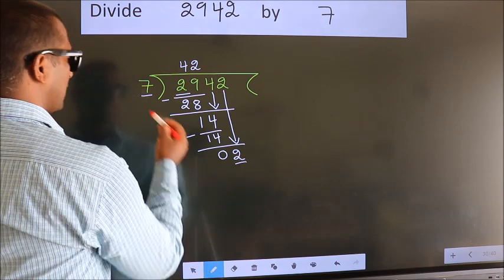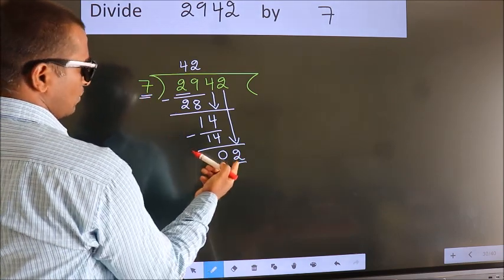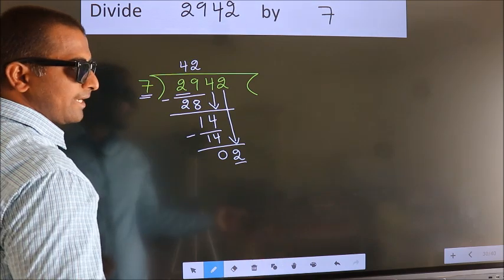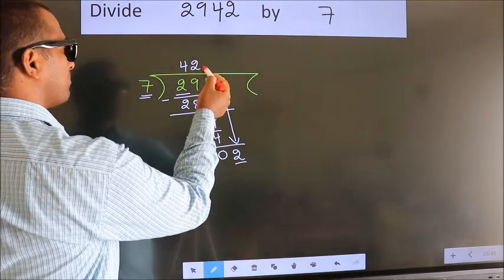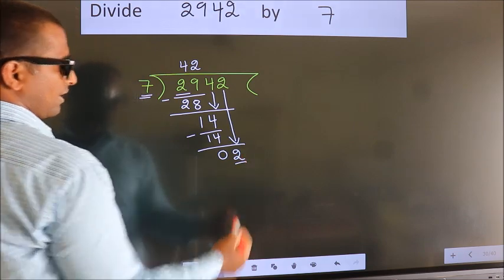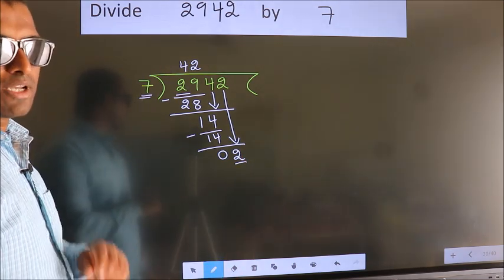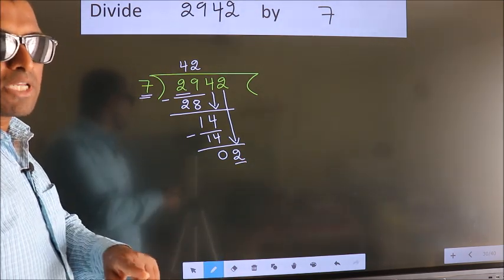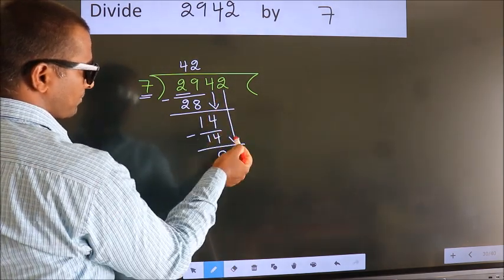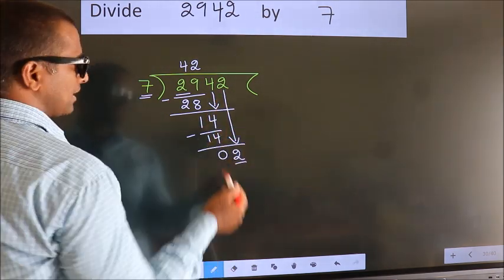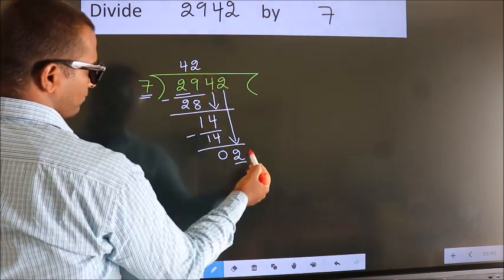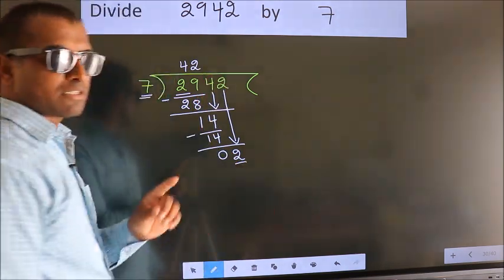Here we have 2. Here 7. 2 smaller than 7. So what many do is they directly put dot, take 0, which is wrong. Why is it wrong? Because just now you brought this number down, and in the same step, you want to put dot, take 0, which is wrong.